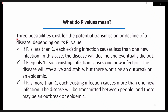What do R values mean? There are three cases for the spread potential of a disease. If the value is less than one, the existing infection causes less than one new infection, so the spread will decline and eventually be gone. If the value is equal to one, the infection causes one new infection, meaning the disease will stay alive and stable, but there won't be an outbreak or epidemic. If the value is more than one, the infection causes more than one new infection, meaning the disease will spread between people and there is always the risk of having an outbreak or epidemic.